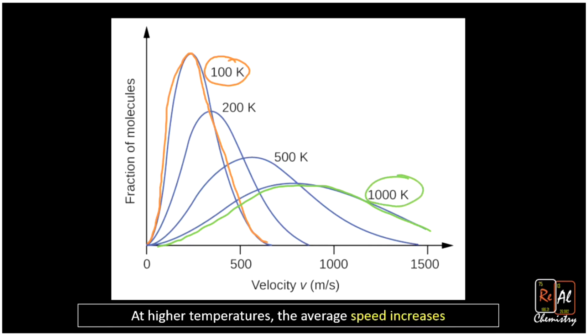What you'll notice is after we warm our molecules, they go faster. If we started out with a sample of gas at 100 Kelvin, maybe its average velocity is 250 meters per second. As it gets warmer, it's going faster and faster. At higher temperatures, the average speed increases.